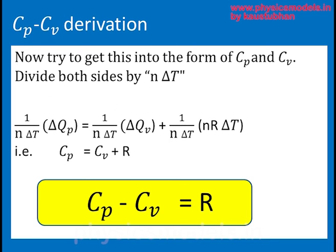Having done that, we must play some chess and get everything into the form Cp minus Cv is equal to R. So on the right hand side of the equation, we want to get rid of all the other terms around R.